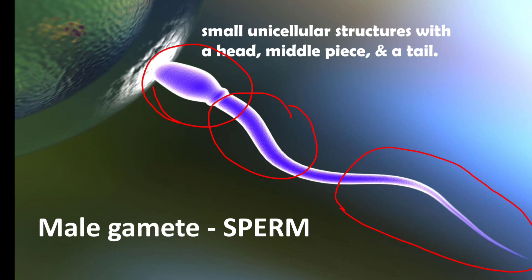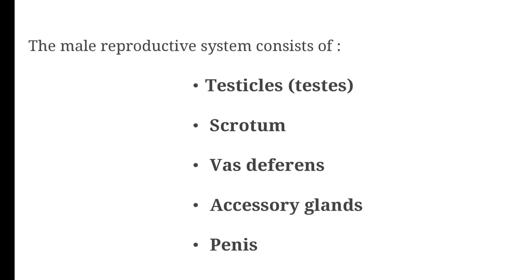The male reproductive system — its structure and function will be covered in this video. The male reproductive system mainly consists of testes, scrotum, vas deferens, accessory glands, and finally the penis.